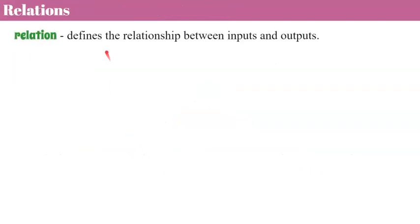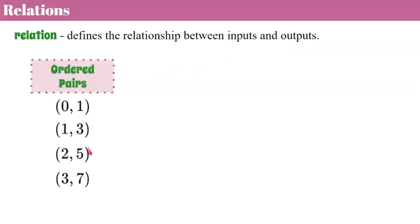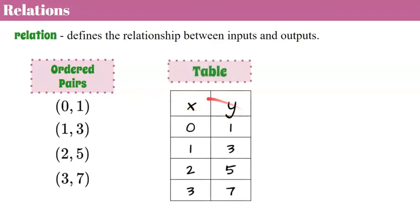Our relation defines the relationship between inputs and outputs. Anytime you see a list of ordered pairs, that is a relation. You could also see it in the form of a table. This table shows a relation between inputs that are paired with specific outputs. So we could interpret this line item as the ordered pair (0, 1), or when x is 1, y is 3, showing the relationship between input 1 and output 3. Here's our next ordered pair (2, 5), and then (3, 7) written as an ordered pair.